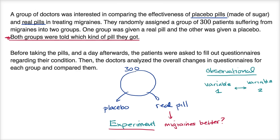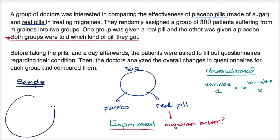And in a sample study, this is just you trying to estimate a parameter for the entire population. So a sample study might have been: of the entire population, what percentage gets migraines? And you can't talk to the entire population — maybe the entire population is millions of people — so you take a sample of, say, a hundred people, and you ask them, do you get migraines? And then you say, that percentage of our sample that get migraines is a good estimate for what percentage of the entire population actually gets migraines. So this was clearly an experiment.